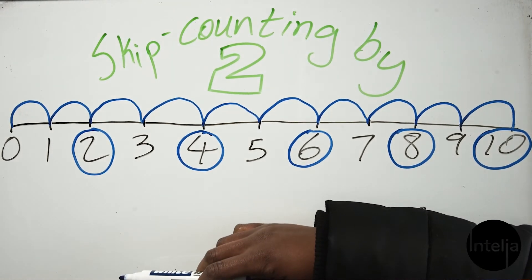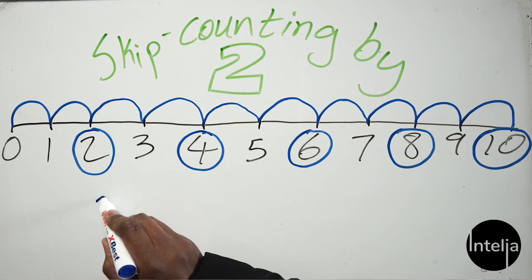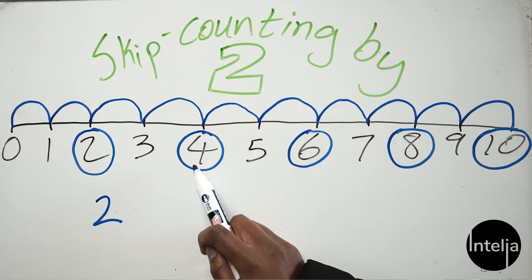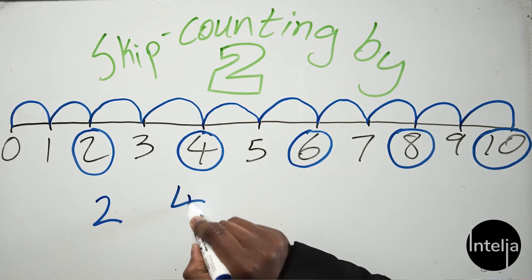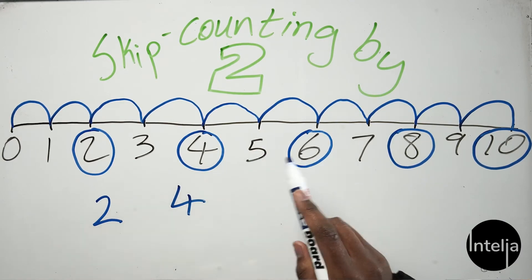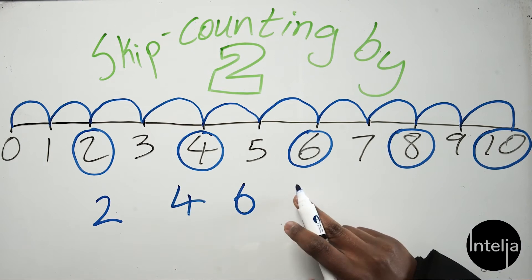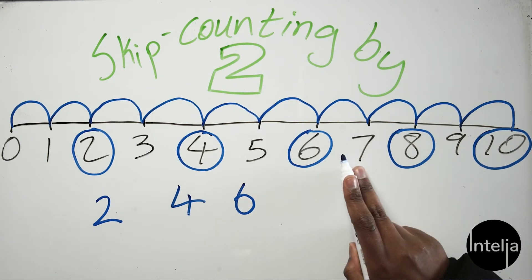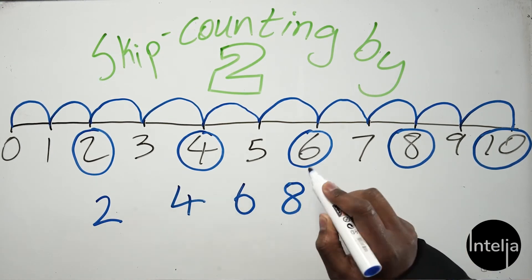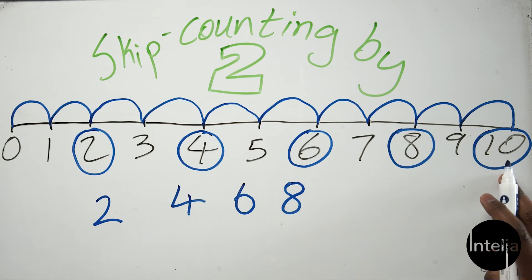Now let's put these numbers together in order, starting with two. So you write down two — and what number comes next that we circled? It's four. And what's our next number? It's not five, it's six! Well done. Now help me again from six — no, it's not seven, we skip seven and it's eight. And the last number we have isn't nine, but it's ten.